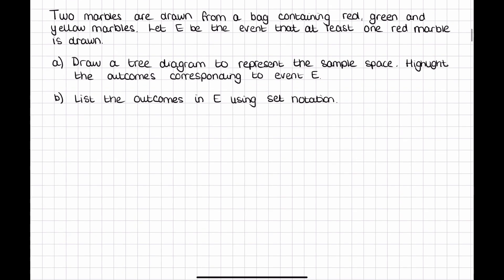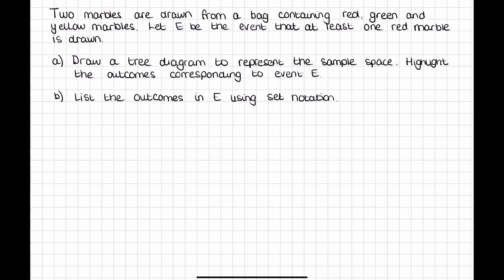So first of all we're just going to draw a tree diagram. Now we've got a bag that has three different colored marbles: red, green, and yellow. So when we draw a tree diagram we're going to need three branches, one for red, one for green, and one for yellow, and that will be marble one.